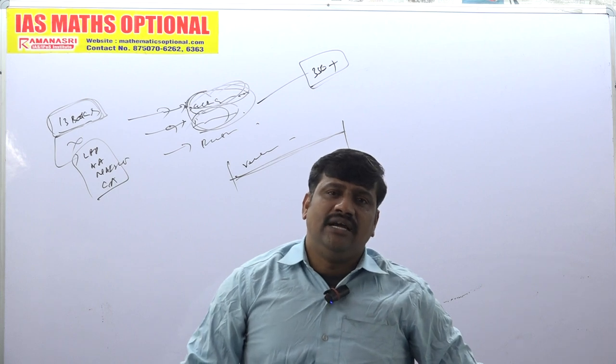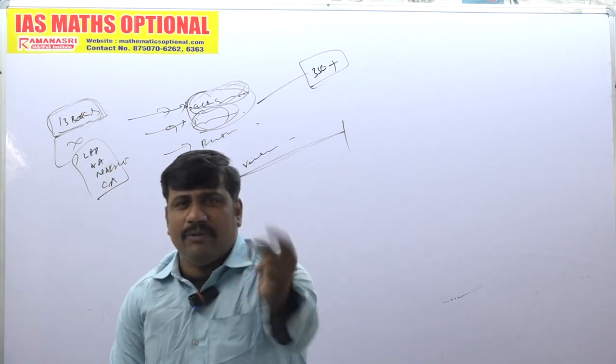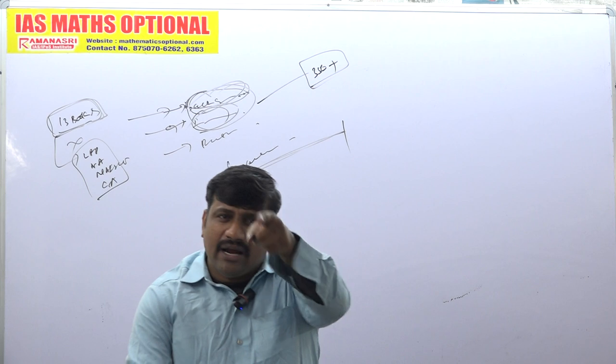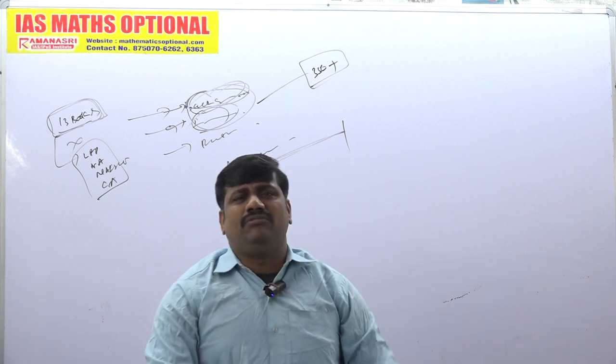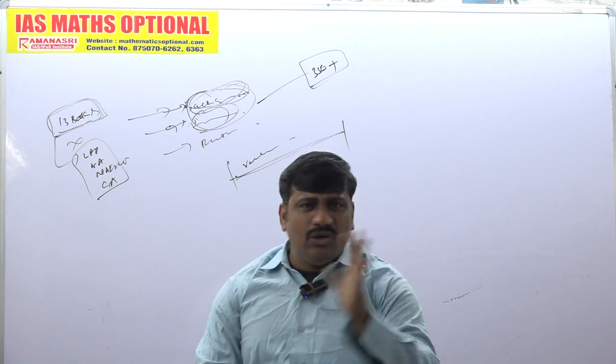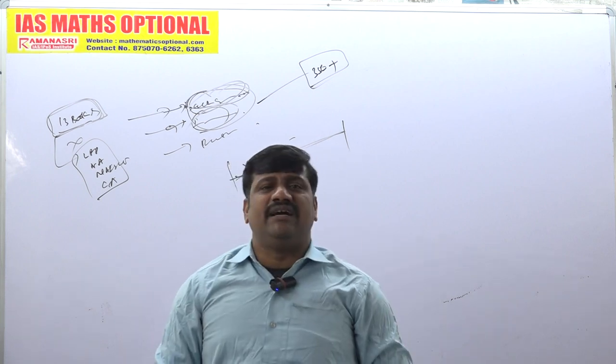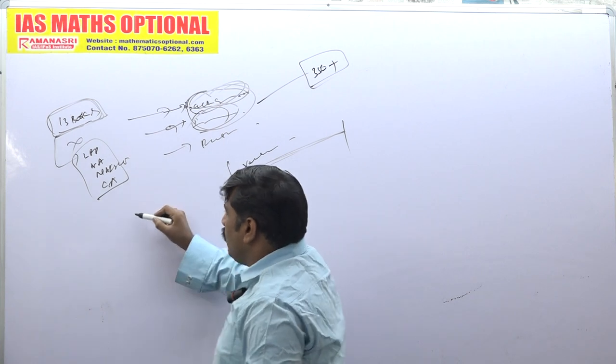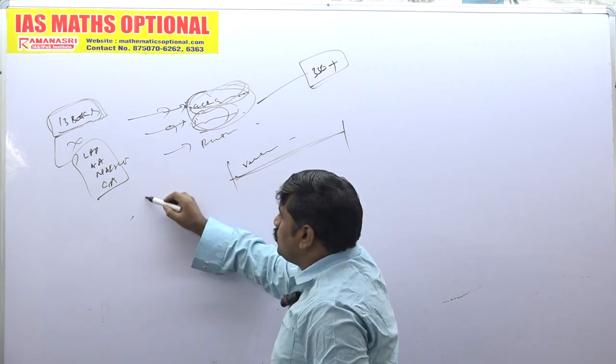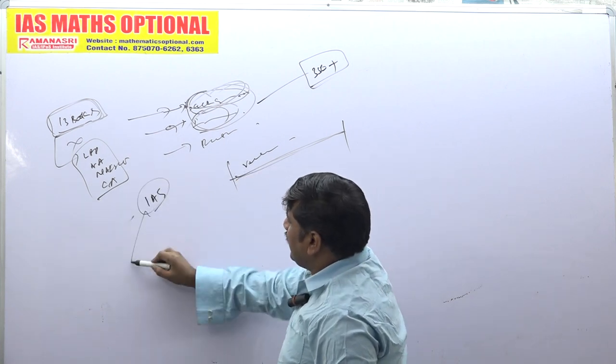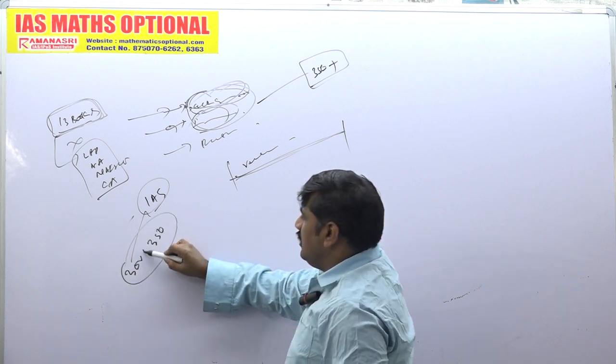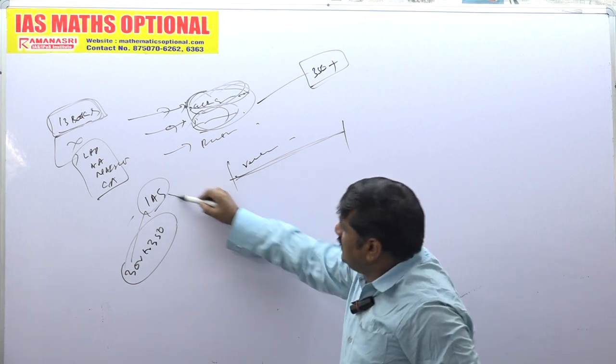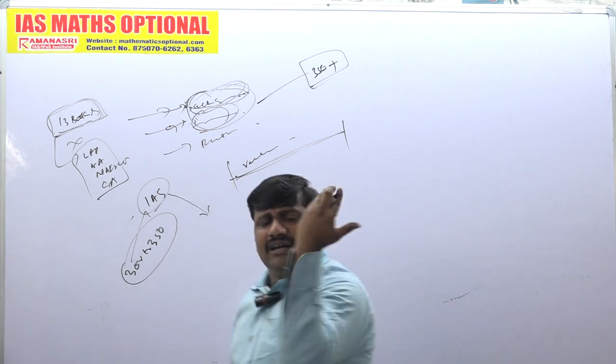Otherwise it will take you 10 years also, still your maths optional syllabus will not be over. You people are unable to finish the syllabus. If people are unable to finish the syllabus, we should not do that. We are not research fellowship IAS students. Our goal is not maths. Our goal should be IAS. In order to achieve that, 300 to 350 marks, that's it. This is sufficient. Rest of the things you need to do some work on.